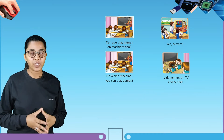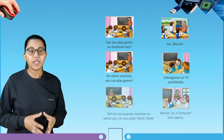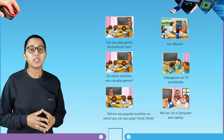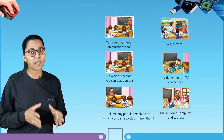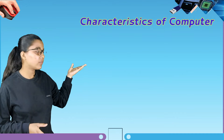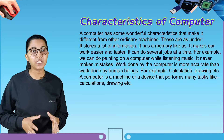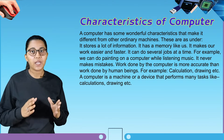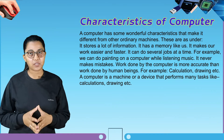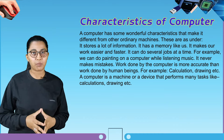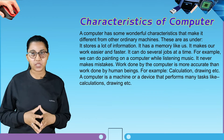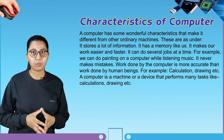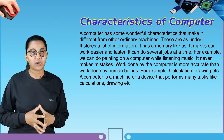Our next topic is characteristics of a computer. A computer has some wonderful characteristics that make it different from ordinary machines. It stores a lot of information and has memory like us. It makes our work easier and faster, and can do several jobs at a time — for example, we can do painting on a computer while listening to music. It never makes mistakes; work done by the computer is more accurate than work done by human beings, for example in calculations and drawing.